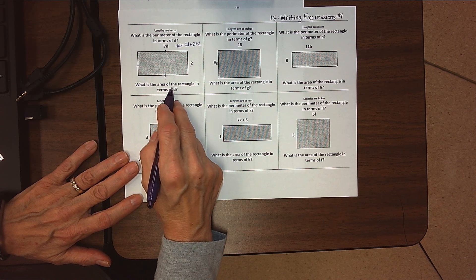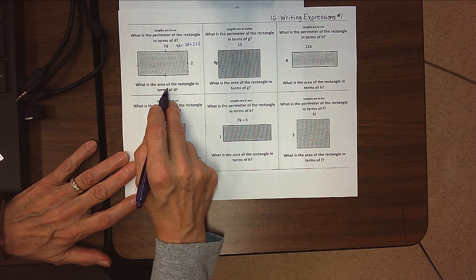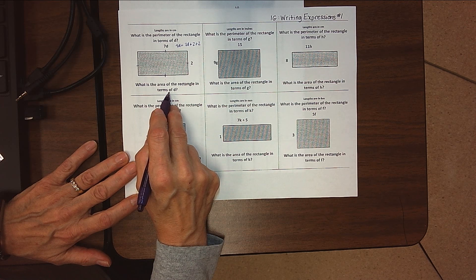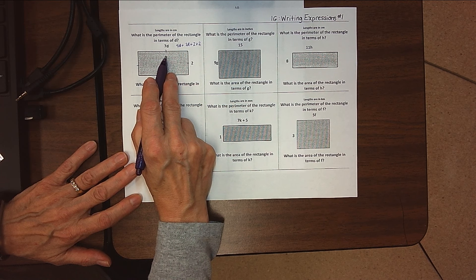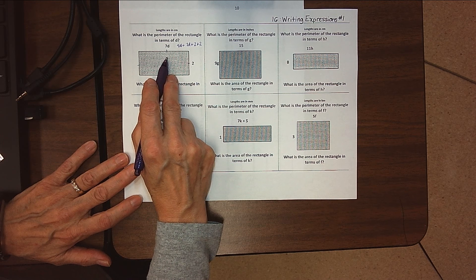Then down here it says what is the area of the rectangle in terms of d. Again, that just means we're leaving that d in there—we're not substituting a number in for it. So area, remember, is length times width.